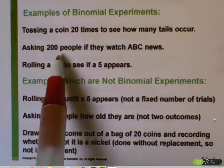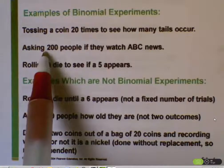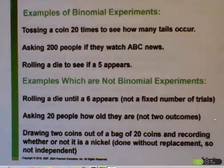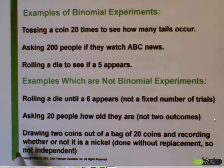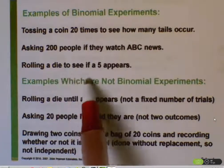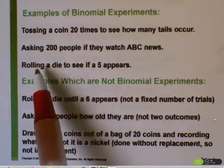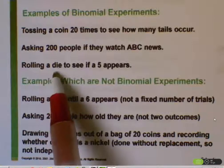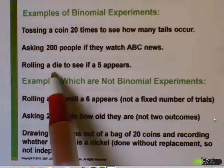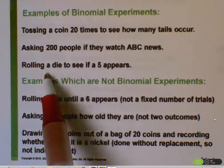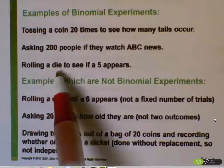Asking 200 people if they watch ABC News — again, that's a fixed number of trials. Whether the first person watches ABC News doesn't affect whether the second person watches, and the two possible outcomes are yes and no. Another example is rolling a die once to see if a five appears. There's a fixed number of trials; there are only two possible outcomes — either yes, five appears, or no, five doesn't appear. This does technically meet the criteria for being a binomial experiment, though it's not the most useful example since we can't really discuss independence with only one trial.